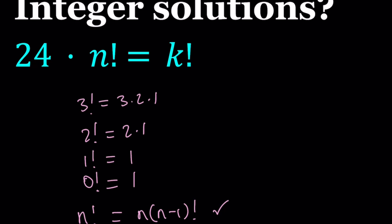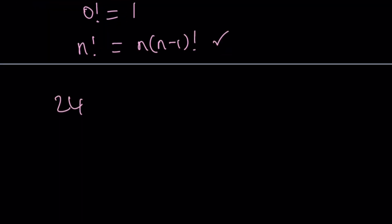So here's what we're going to do. We have 24 times n factorial equals k factorial. Since n factorial and k factorial are integers and 24 is also an integer, I'm going to divide both sides by n factorial. And I want you to notice one thing: n is less than k. Can they be equal? They can't. So k is greater, and that's going to be important.